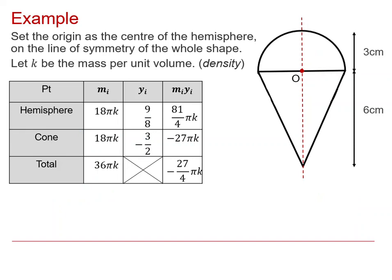Well, there we are. We've got the 18 pi k times the nine over eight, and we've got the 18 pi k. They have the same volume, it turns out, and hence the same mass, and that's times the negative coordinate. So again, the totals are formed, and that allows us to work out the y-bar by doing that calculation.